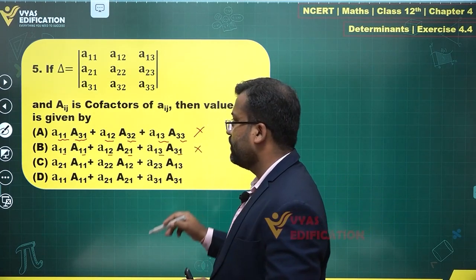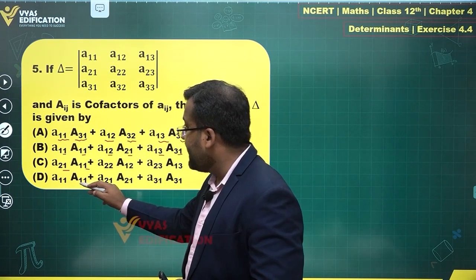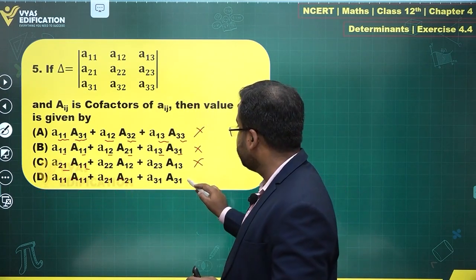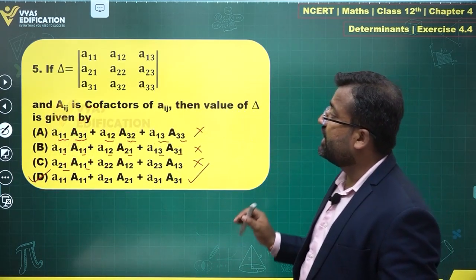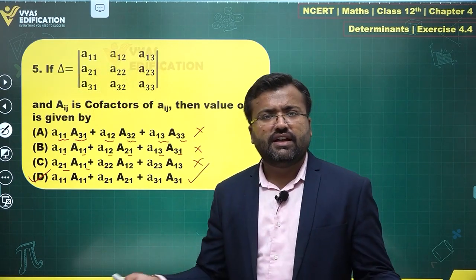Two one - no, no, this is also not okay. A₁₁ A₁₁, A₁₂ A₂₁, A₂₁ A₂₁, A₃₁ - yes, this is the value of the determinant. Option D will give me the value of the determinant, as you can clearly see behind me. That's all in this question.